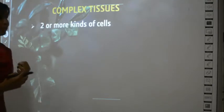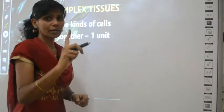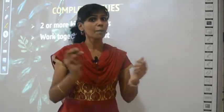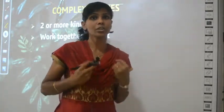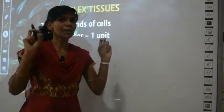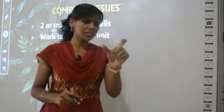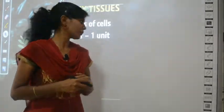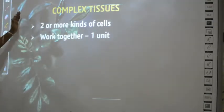Complex tissues have two or more types of cells that work together as one unit. Though their structure and shape may differ, they perform the same function — that's why they are grouped together. Tissues are a group of cells. In complex tissues there will be two or three types of cells located in the same place doing the same function, appearing as one structure from outside.